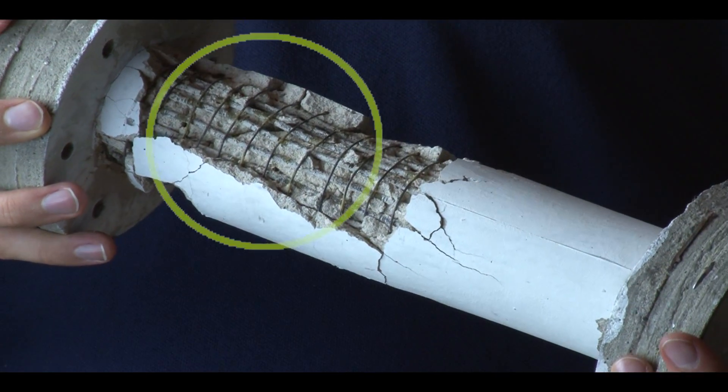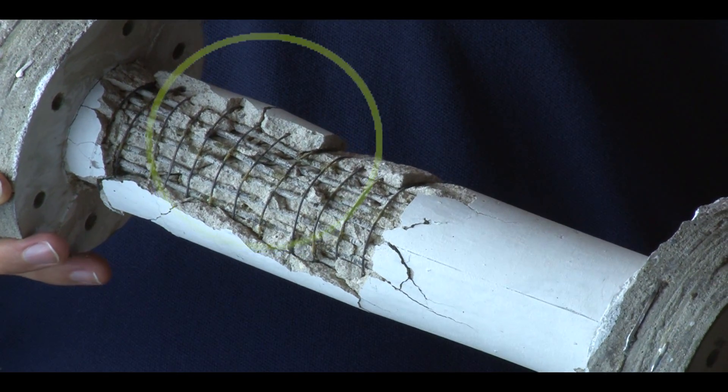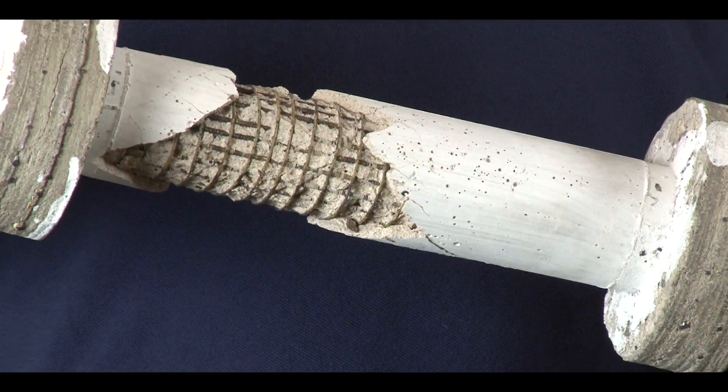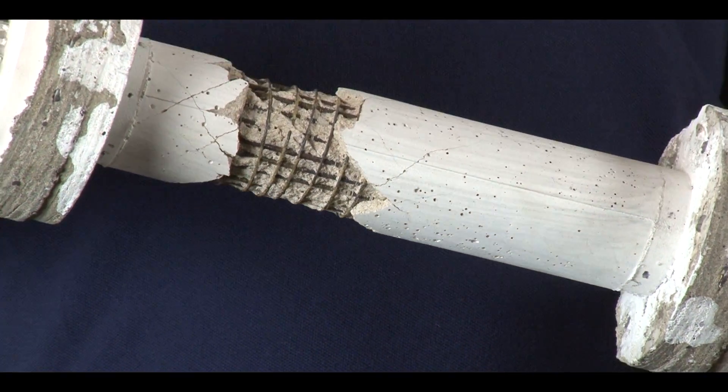Unlike in a shear test, where the crack propagates through the specimen, the cracking pattern in torsion propagates around the perimeter of the specimen.